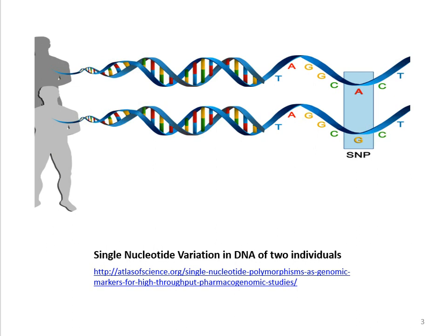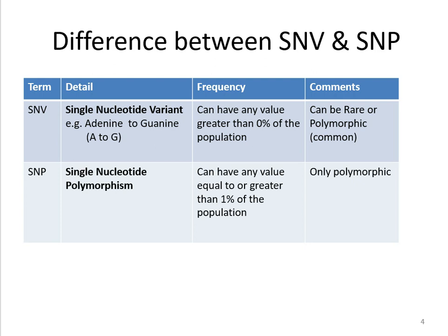So this is a sort of variation between these two individuals, and this is called Single Nucleotide Variation in the DNA of two individuals. This forms the concept of SNV as well as SNP. So let's have a look at the variation between the two terms.